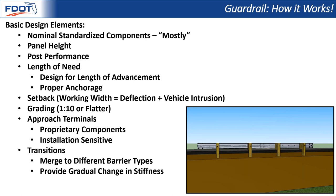Transitions are another big part of a crash worthy guardrail system — that's where you go from two different types of barrier systems, such as merging a W-beam guardrail with a concrete bridge rail. Those have to be specially designed and installed so that when you go from a fairly flexible guardrail system, you gradually change the stiffness to where it's no longer providing any deflection, thereby gradually transitioning the impact zone from a flexible system to a rigid system.